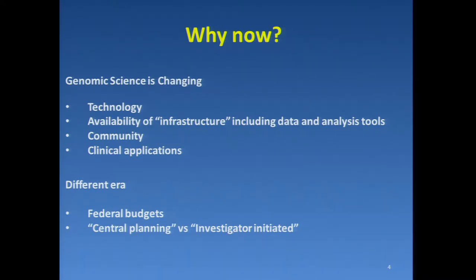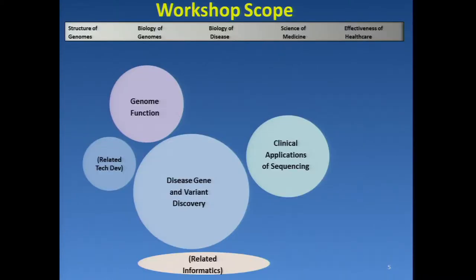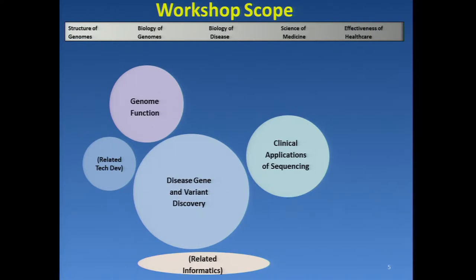We are in a different era with federal budgets the way they are, and discussions ongoing at NIH about central planning versus investigator-initiated work. This diagram illustrates the workshop scope. The workshop scope centered on disease gene and variant discovery but had a substantial element regarding genome function, which was completely in bounds, and also a substantial element of clinical applications of sequencing. Technology development and related informatics are both in parentheses because we didn't include them as standalone topics, but we were pretty sure they would come up — and in fact they did.